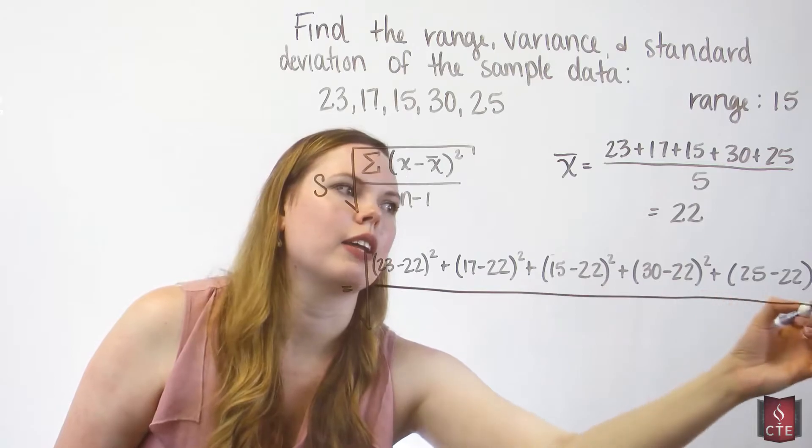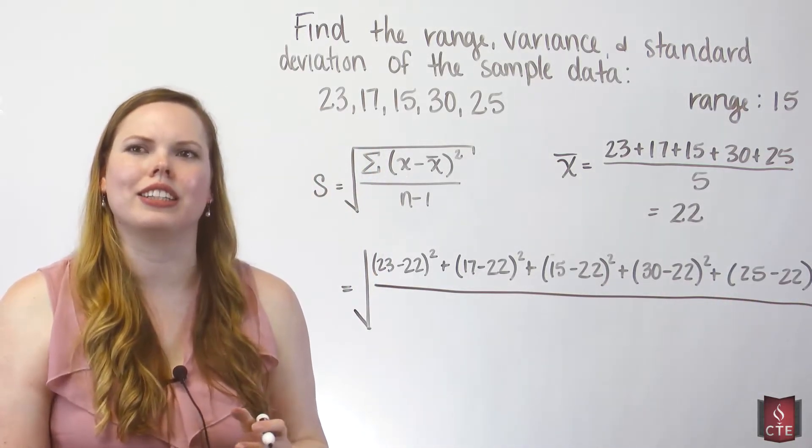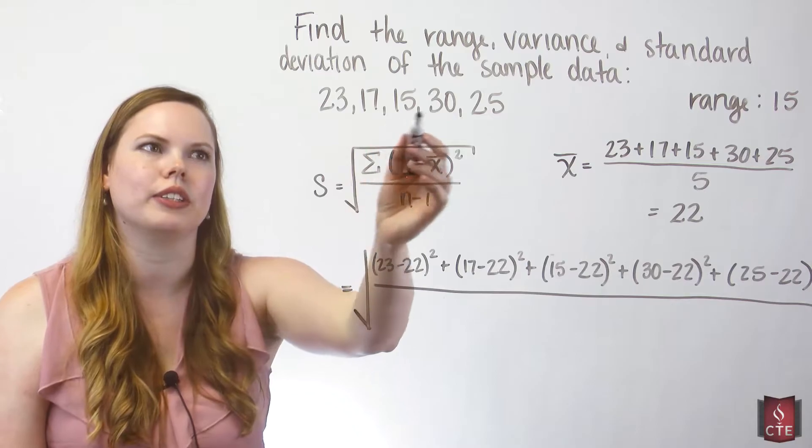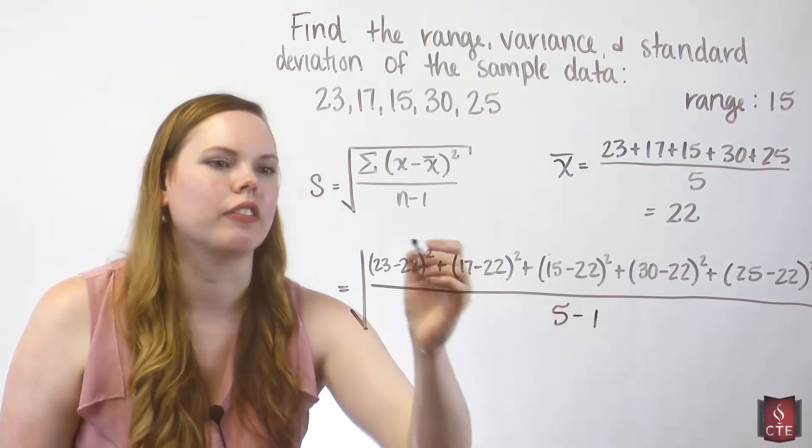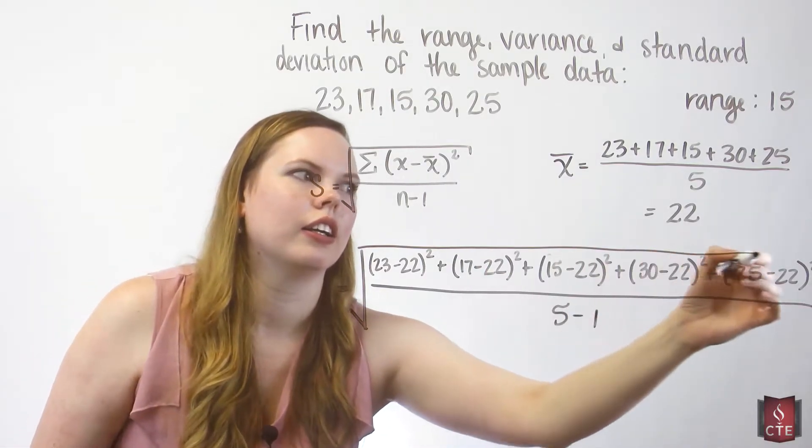Divide all of this by n minus 1. n is our sample size. So it's the number of data values that we have. So we have 1, 2, 3, 4, 5 here. So n is 5. Subtract 1 from it. And there we go.